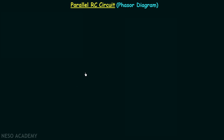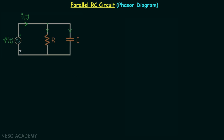Let us begin our analysis. I have taken the parallel RC circuit. The phasor of the current through the resistor is IR phasor, the phasor of the current through the capacitor is IC phasor, the net phasor current is I phasor, and the net phasor voltage is V phasor.